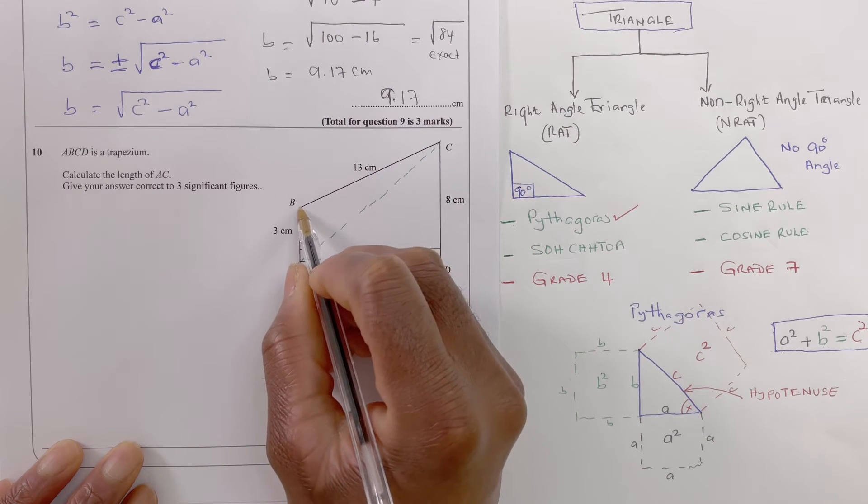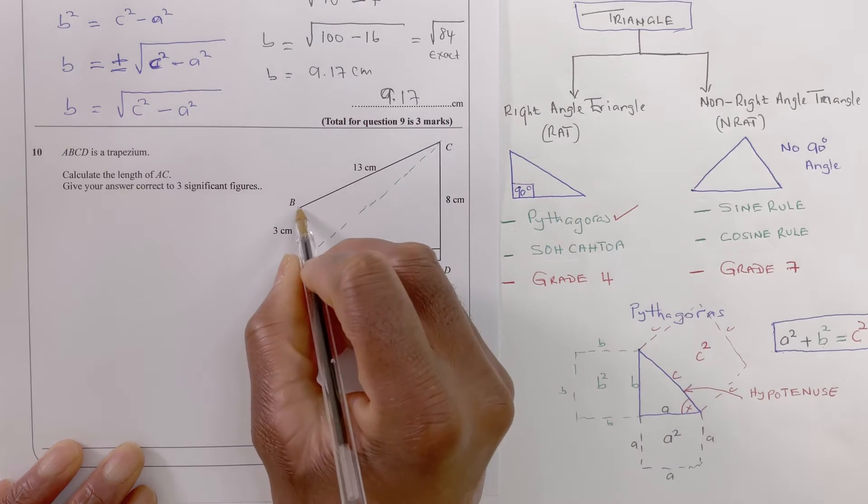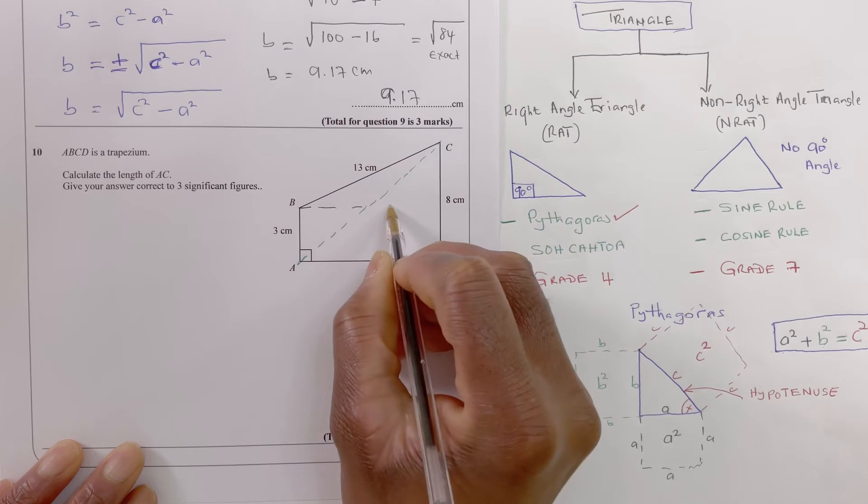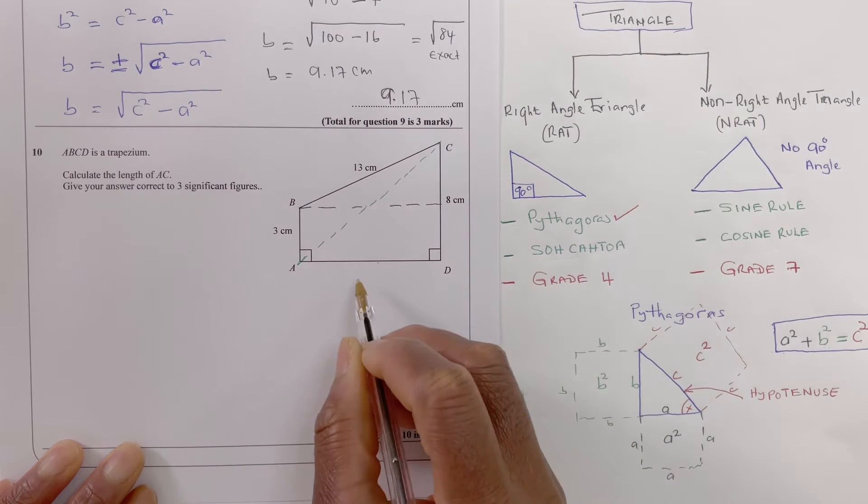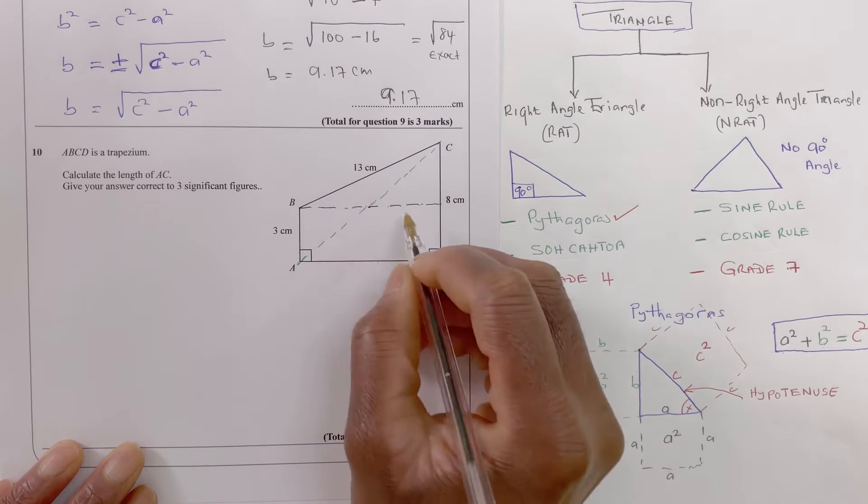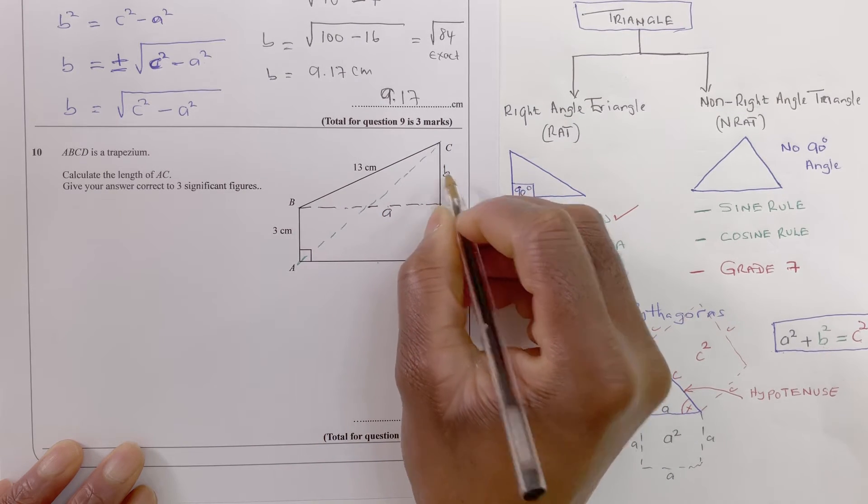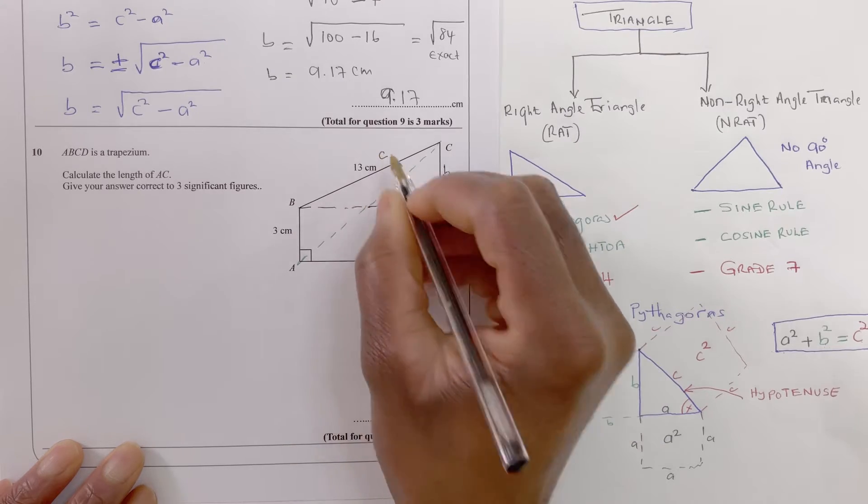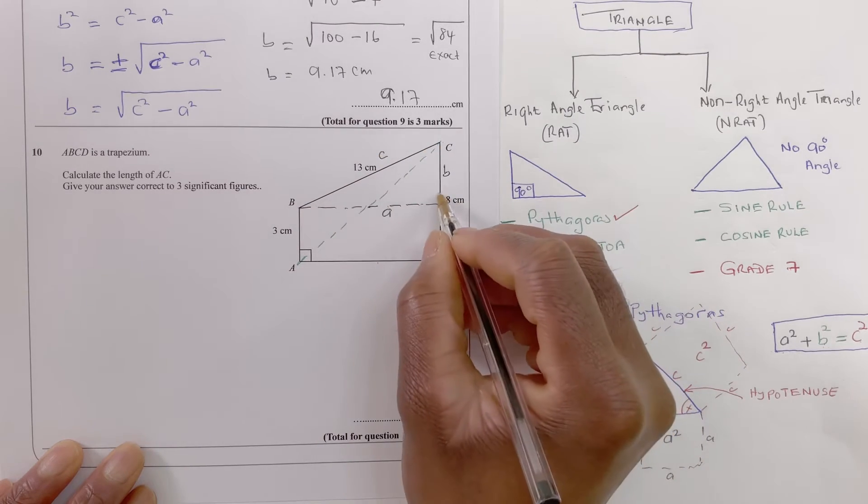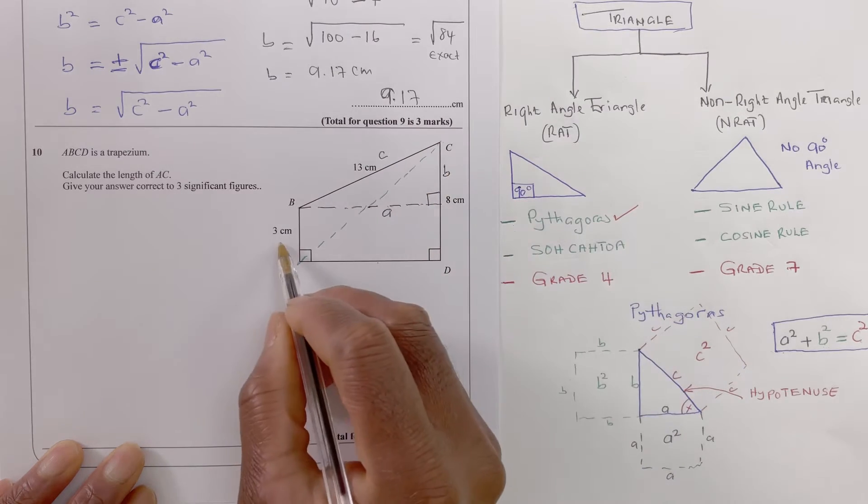I know if I draw a line across here, you see right, I know I can find this length. Yes, let's call this length a and let's call that b, and let's call that c. c is the longest side of this right angle triangle.